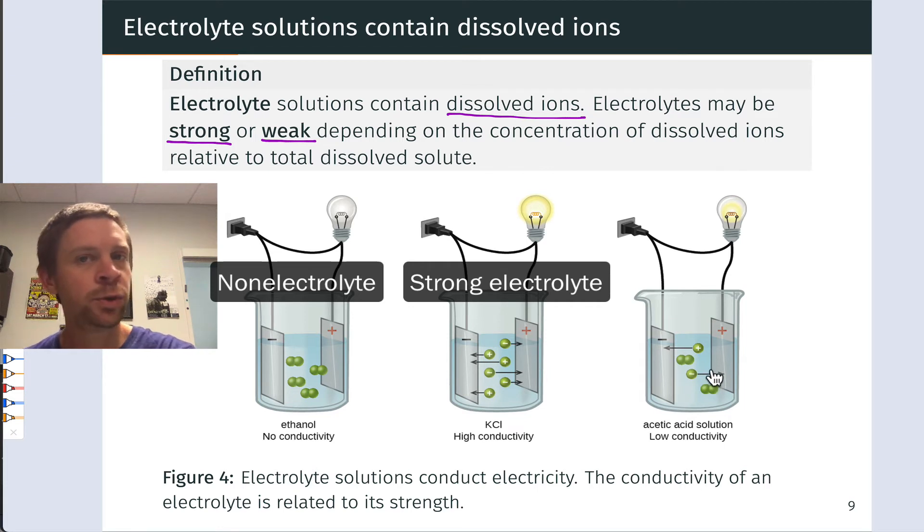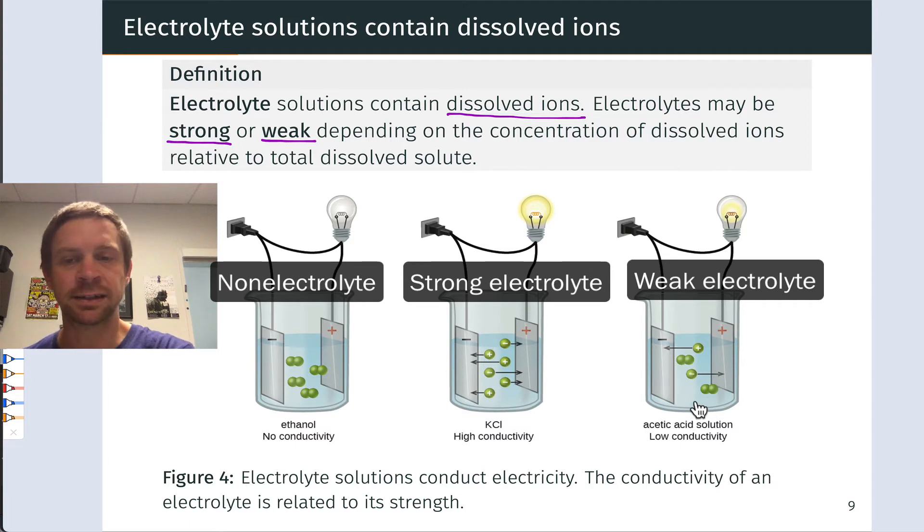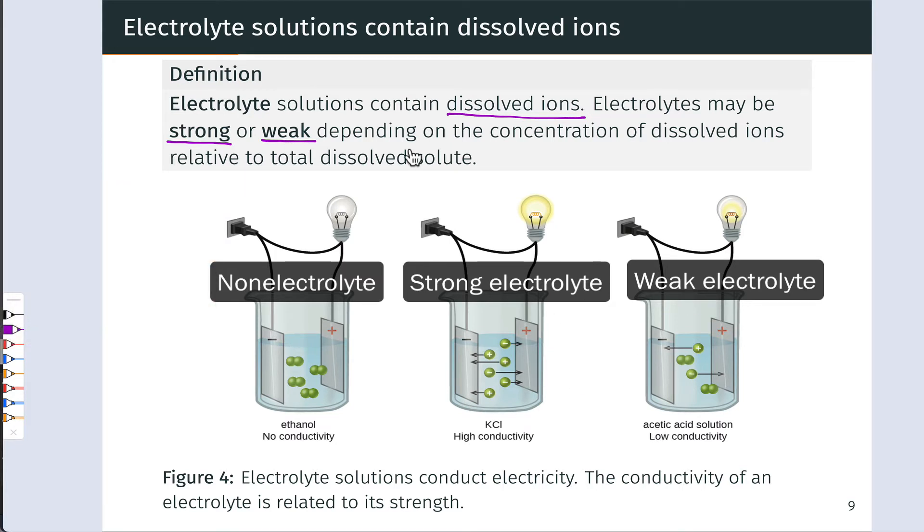Acetic acid dissociates to an incomplete or partial degree. When I take acetic acid and dissolve it in water, only a small portion of the molecules react with water to form ions. So the concentration of dissolved ions is relatively low, the current flow is relatively low, and the solution is not very conductive. This is what we would call a weak electrolyte solution. And this is typical of covalent compounds that react incompletely or only partially with the solvent to form a small concentration of dissolved ions.